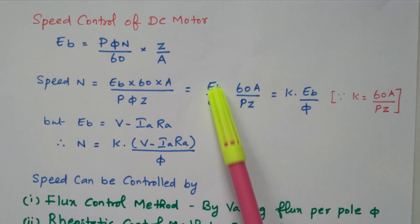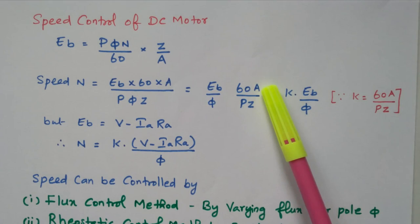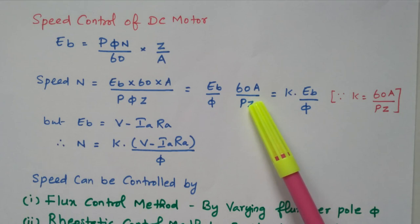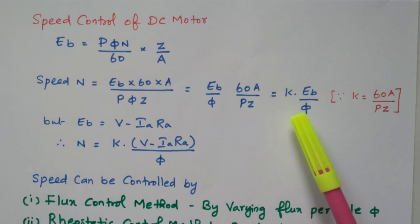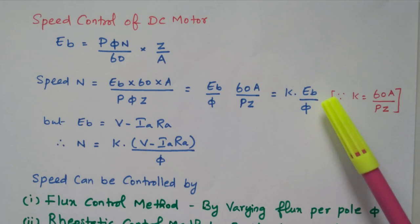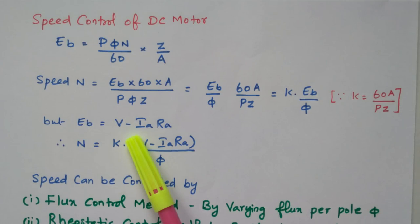In this expression, EB and phi are the variable quantities. The terms 60, A, P, and Z — number of poles, number of parallel paths, number of conductors — these are all constant; they will not vary, so we can take them as a constant K. Therefore N equal to K into EB by phi, so it depends upon only two variable parameters: back EMF and flux.